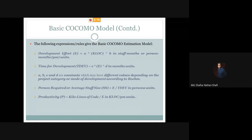According to Boehm, once we calculate the development effort and time for development, based on these we calculate the person required, or average staff size (SS). This gives a direct estimation of how many persons may be needed for the project development.